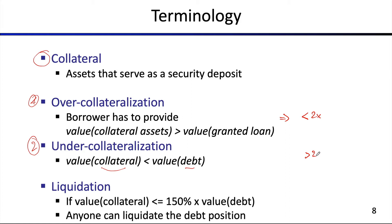Now you might ask: well, on chain I'm anonymous, right? I can just take on any kind of collateral and then just run away with the money — why would I need to pay it back? Well, in the over-collateralized lending systems, you can freely use the debt that you take on. It's actually a token that you can re-deposit — you can even re-deposit it as collateral in some systems.